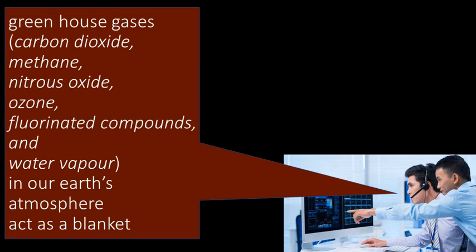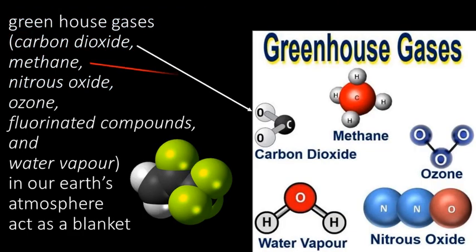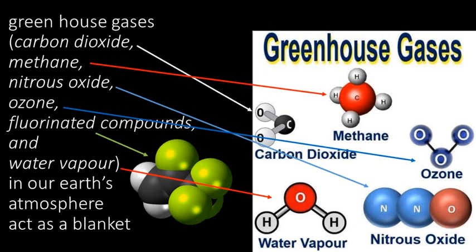Greenhouse gases — carbon dioxide, methane, nitrous oxide, ozone, fluorinated compounds, and water vapor — in our Earth's atmosphere act as a blanket.